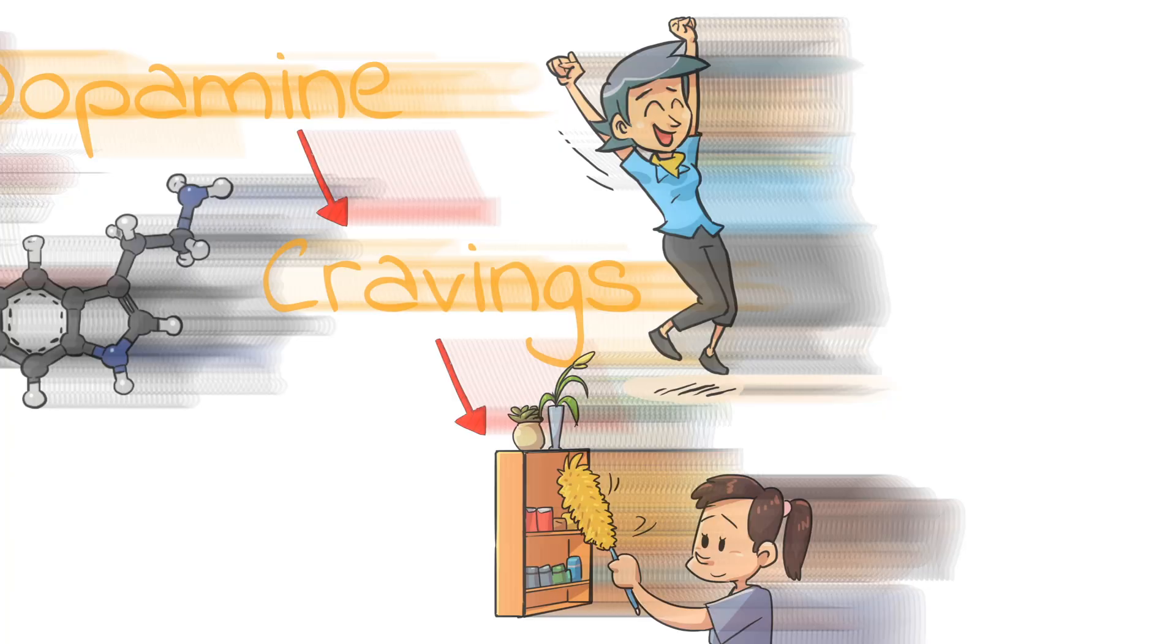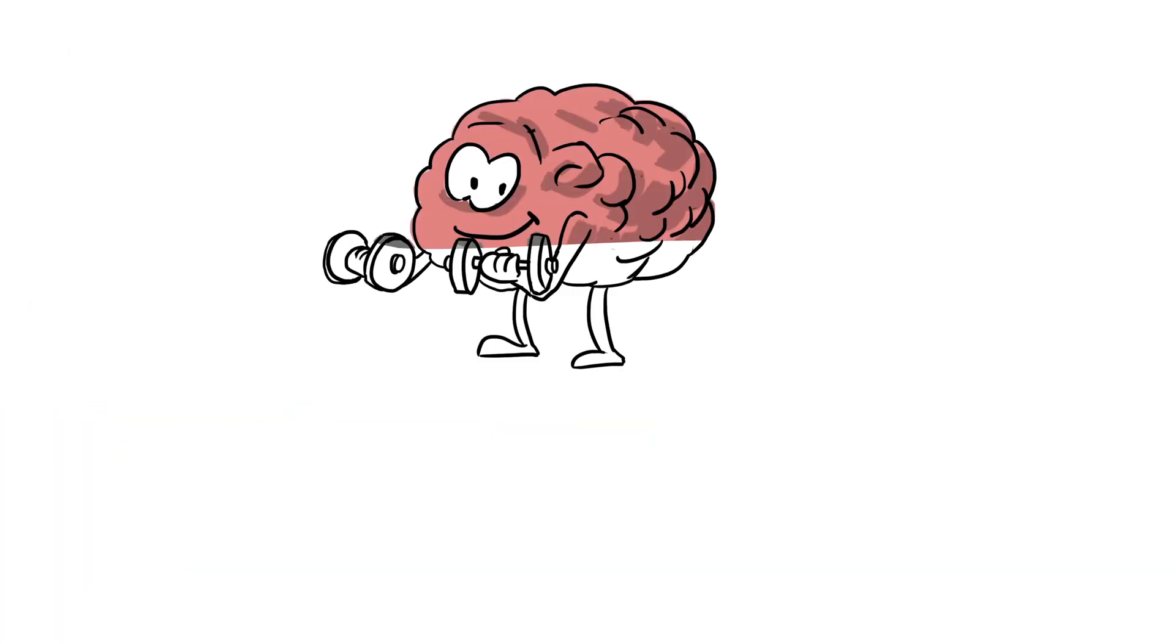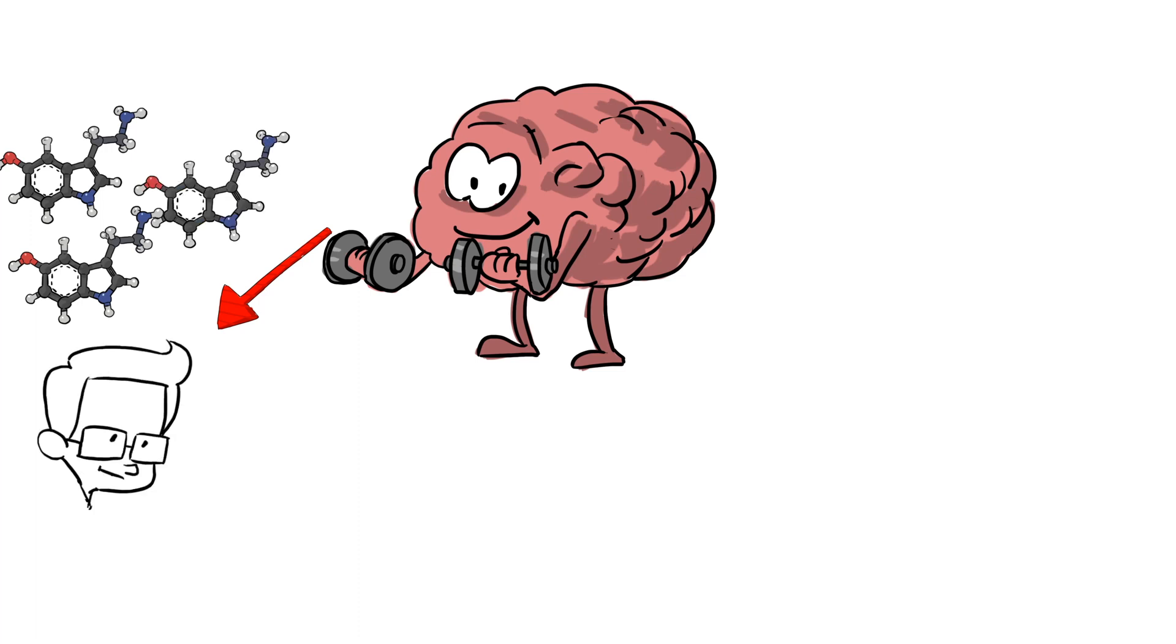Our brain prioritizes activities based on the expected dopamine release. The issue arises when we expose our brains to unnaturally high dopamine levels through daily activities such as browsing social media or gaming.